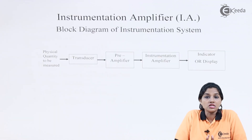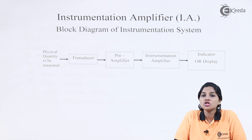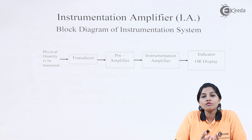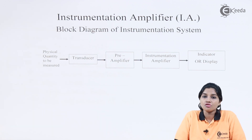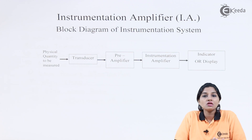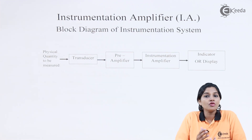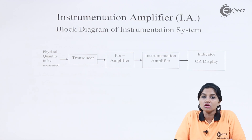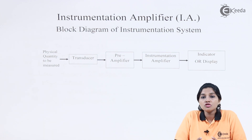The instrumentation amplifier is basically a difference amplifier which meets special requirements, or we can say the instrumentation amplifier is a signal conditioner only. In the case of an instrumentation amplifier, the first block is always a transducer, because the quantities required to be measured and controlled are in physical form. These physical quantities cannot be applied directly to the instrumentation system. Therefore, it is very important to convert this physical quantity into the equivalent electrical signal, which may be current or voltage. This conversion process is performed by a device called a transducer.